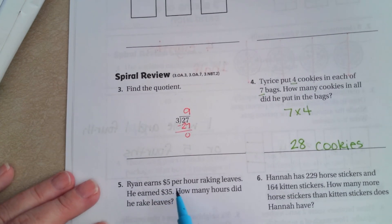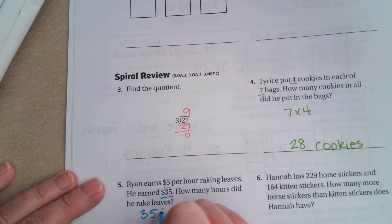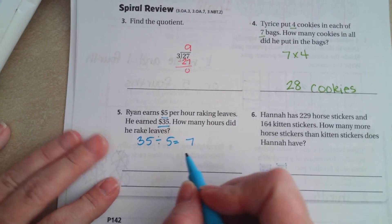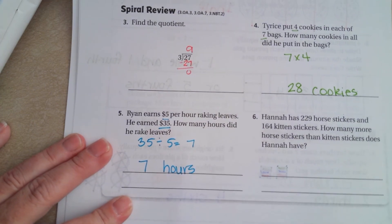Ryan earned $5 per hour raking leaves. Here, in $35 total. Well, 35 divided by 5, how many hours? Well, 5 times 7. Sorry, you guys can't see that. 5 times 7 is 35, so 7 hours.